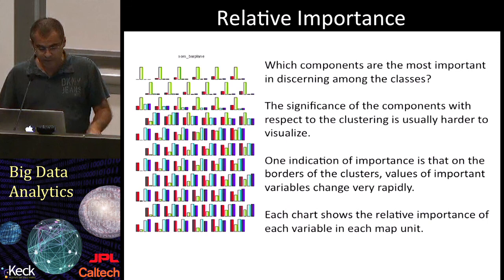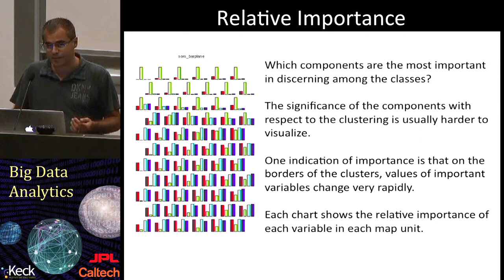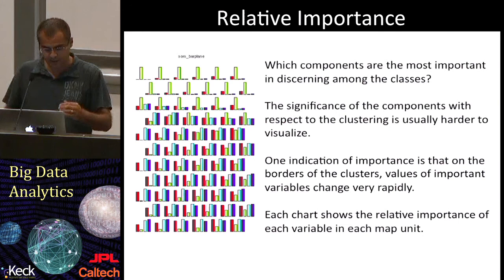With this method, we can also answer the important question of which parameters are the most important in discriminating between classes. Basically, we can derive the relative weight of each variable in each map unit. In this example, the second parameter — shown as a green histogram — is very prominent in the upper part of the map, and so helps to discriminate between the classes really well.